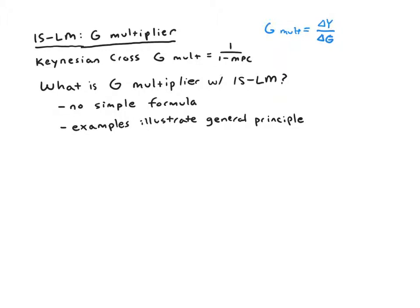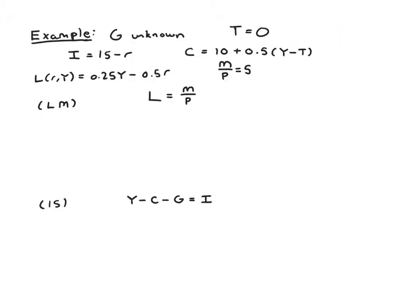But it's a really helpful illustration of a really important policy application we can do with IS-LM. And it also helps to illustrate what makes IS-LM different than the Keynesian cross. What does the IS-LM model capture that the Keynesian cross left out?